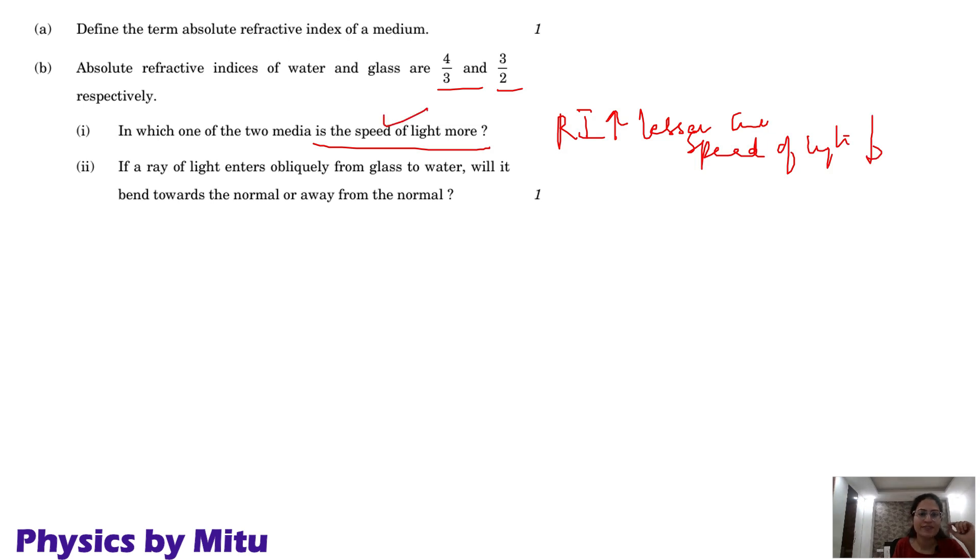Because if the refractive index is greater, speed is less. Which is greater? 4 by 3, 3 by 2, 8 and 9, this one is greater. So speed will be more in water.